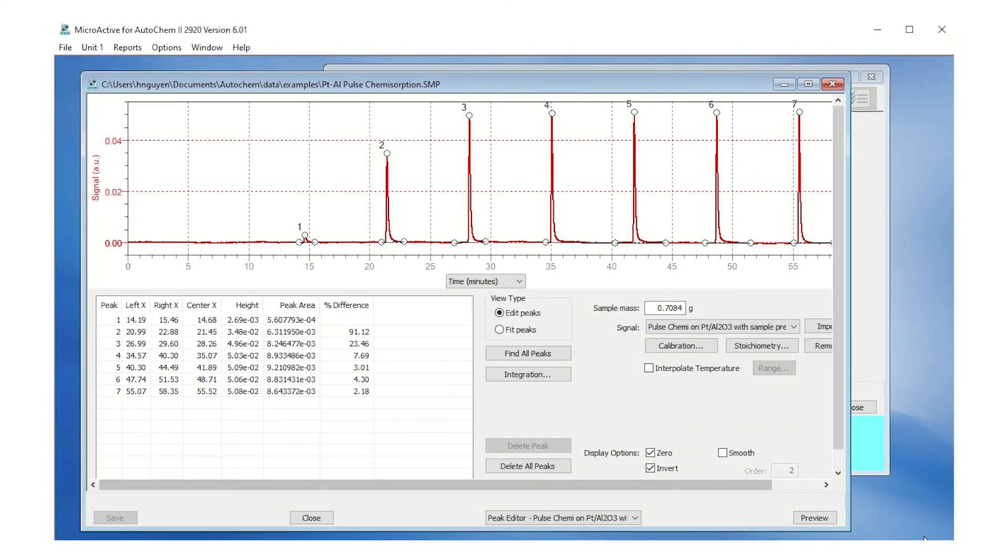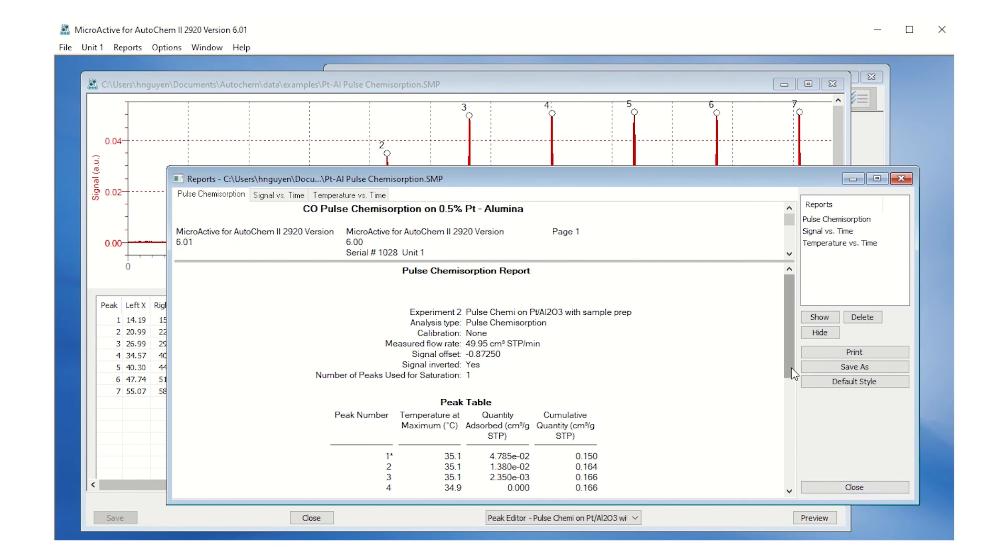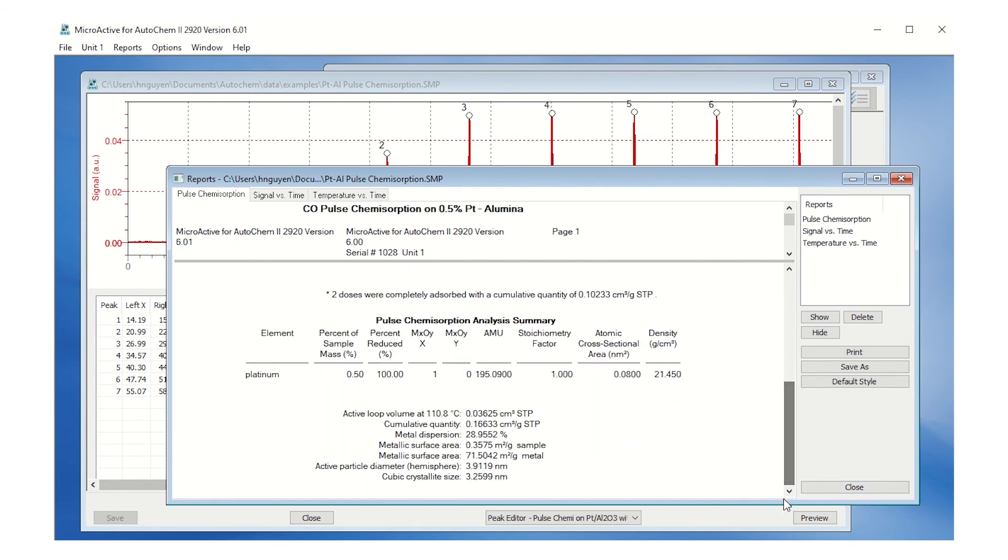Now the results are ready for viewing. Click on Preview on the sample file to display the report. Verify the measured metal dispersion within the specifications indicated on the manual of the reference material.